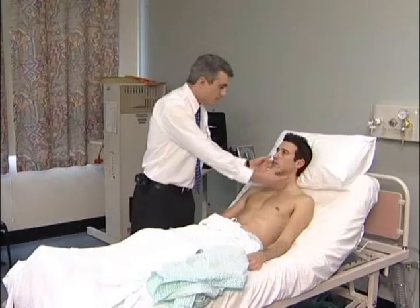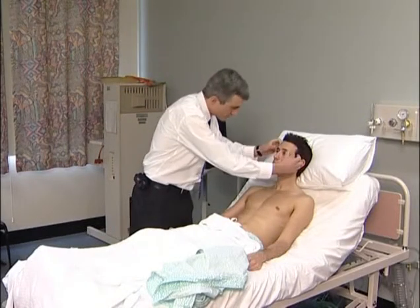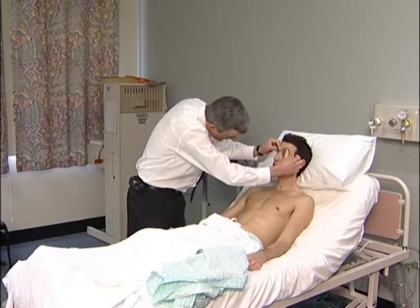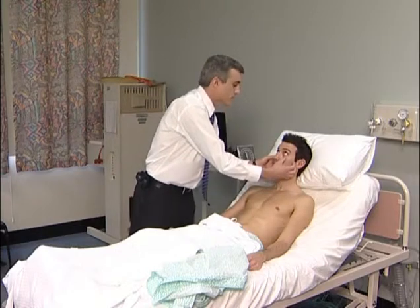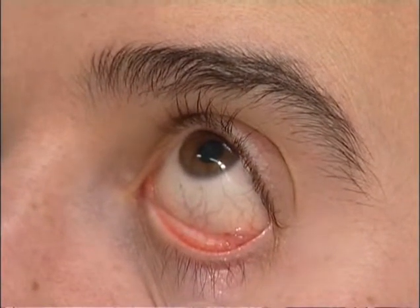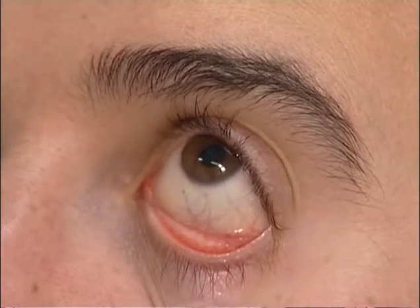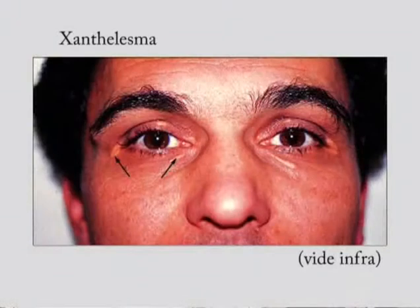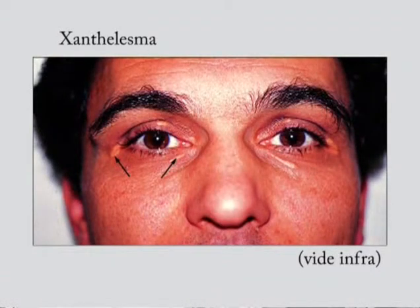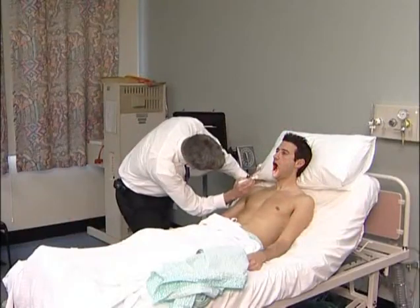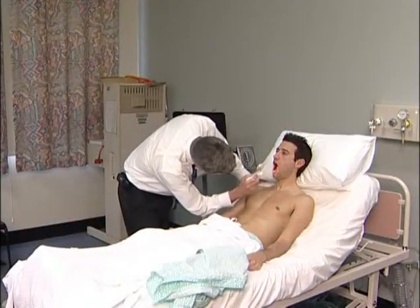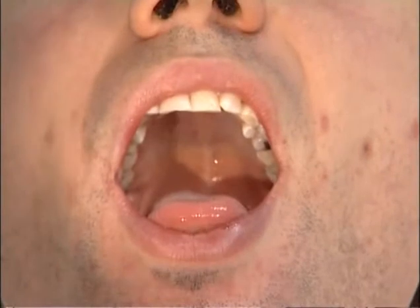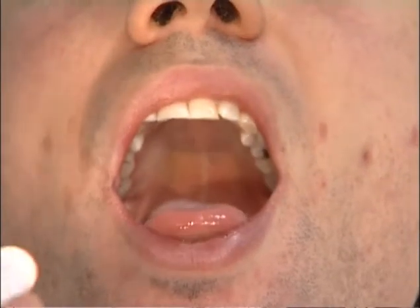The examination moves on to the face where the eyes are inspected for scleral jaundice and the orbits for xanthelasma. Look at the conjunctiva for pallor — loss of the normal contrast between the anterior erythematous conjunctiva and the posterior pearly white appearance is a reliable sign of anemia. Look for the malar flush of mitral stenosis, and in the mouth for the high arched palate of Marfan syndrome and at the state of the teeth.